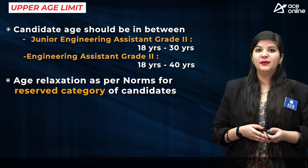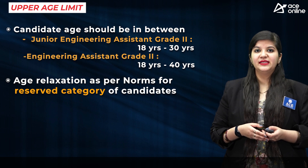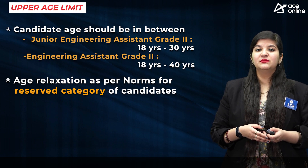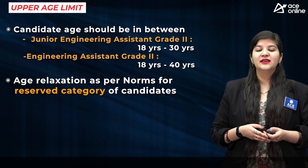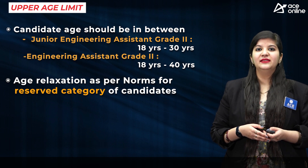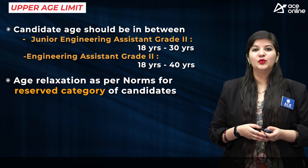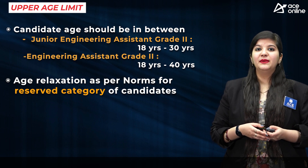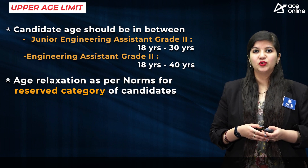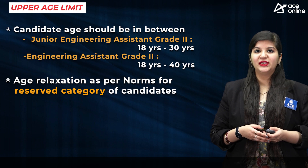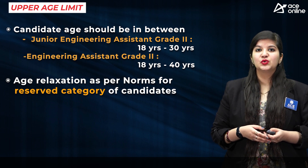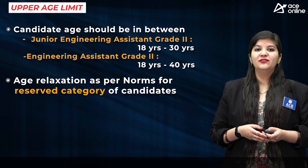Now we'll have a look at age limit requirements. For the post of Junior Engineering Assistant Grade 2, the minimum age requirement is 18 years and the maximum age should not be more than 30 years. For the Engineering Assistant Grade 2 post, minimum age should be 18 years and maximum age should not be more than 40 years. Age relaxation for reserved category students will be provided as per the norms.